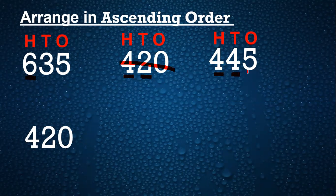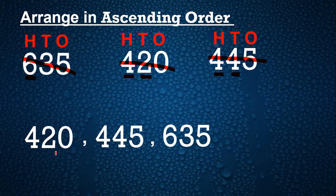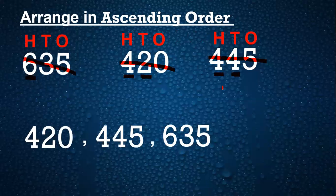Next we have 445. So 4 is the next big number because 6 is the biggest number. So 445 is the next number. We'll write 445, cut this, and the next biggest number is 635. We'll write 635 and cut this. So we arranged from small to big: 420, 445, and 635. When the hundreds place digits are the same, we look at the digits in the tens place — here we had 2 and 4, so smallest is 2. So like this we arrange numbers in ascending order.